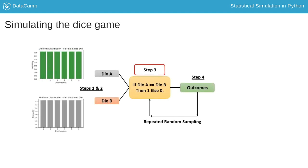In step 3, we define the relationship between each of the dice. If they show the same number, we win. Otherwise, we lose.